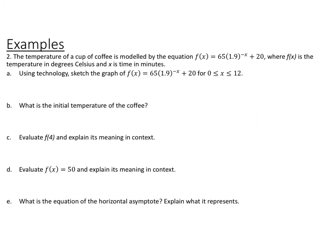This next example says the temperature of a cup of coffee is modeled by f of x equals 65 times 1.9 to the negative x plus 20, where f of x is the temperature in degrees Celsius and x is the time in minutes. Using technology, sketch the graph for x between 0 and 12, then answer: what is the initial temperature, evaluate f of 4 and explain its meaning, evaluate when f of x equals 50 and explain its meaning, and find the equation of the horizontal asymptote and what it represents.